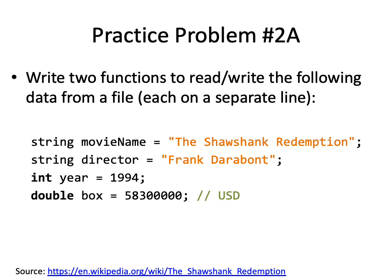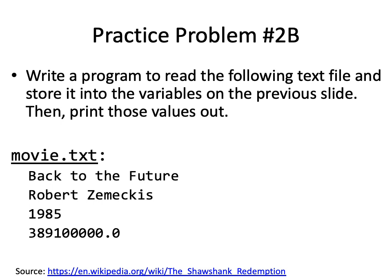Another practice problem — we've opened up a whole new world with files. Write two functions: one to read and one to write the following data from a file, each on a separate line: string movie name ('The Shawshank Redemption'), string director ('Frank Darabont'), int year, and double box office revenue (58.3 million). That's my favorite movie, by the way. One function takes a string, string, int, and double, plus the file name, and writes them. The other function passes those variables by reference and reads them in to initialize them. Practice problem 2b: write a program to read a text file called movie.txt with the contents 'Back to the Future', 'Robert Zemeckis', 1985, and the box office revenue, then print those variables.